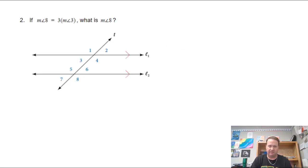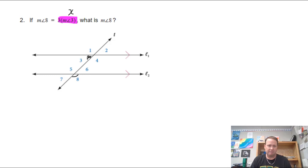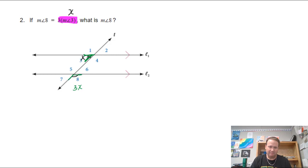Here's problem two. They tell me the measure of angle eight is three times the measure of angle three — so angle eight is three times bigger than angle three. Since we don't know angle three, let angle three equal x. That makes the measure of angle eight equal to 3x. Looking at the relationship: angle three is a small acute angle and angle eight is a large obtuse angle, so together they add up to 180 degrees. The equation is x plus 3x equals 180.